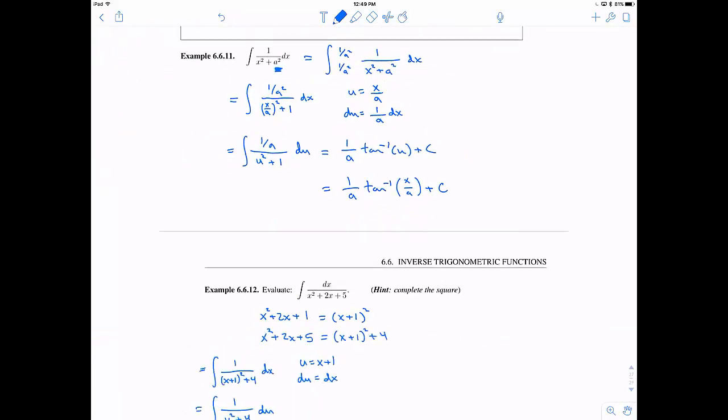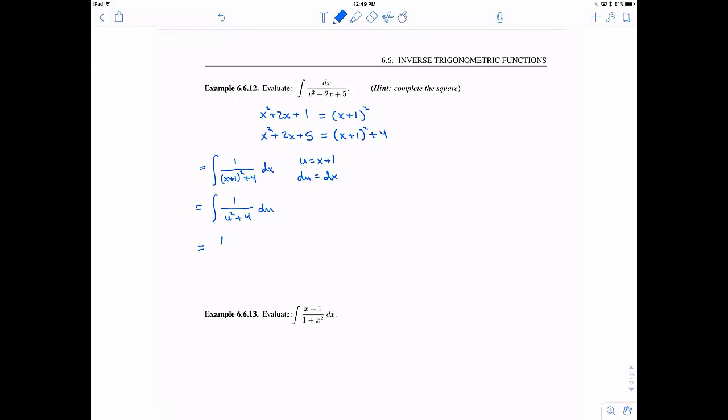Now, using the formula that we've derived up here, we know our a should be 2, right? Because 2 squared is 4. So I get 1 half tangent inverse of u over 2, our a is 2, plus c.